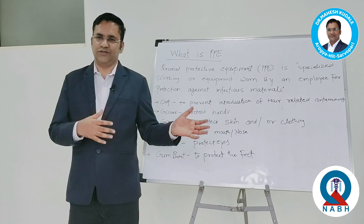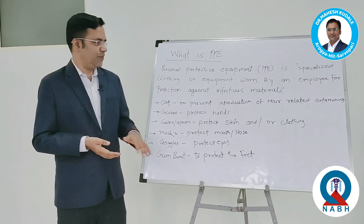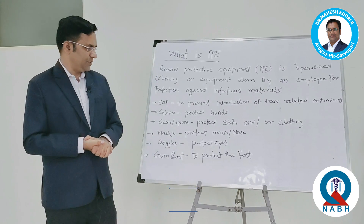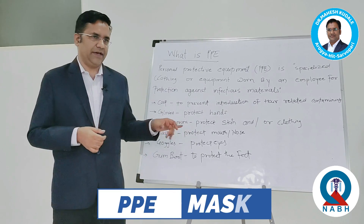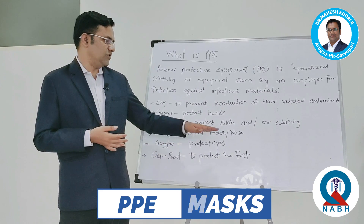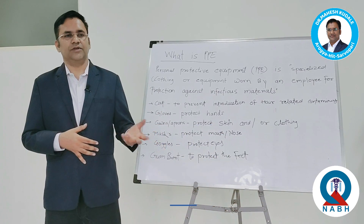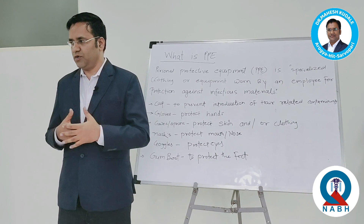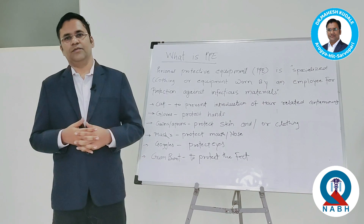तो इसके लिए पूरे body को gown होना ज़रूरी है. जैसे अगर patient का surgery चालू है और patient को HIV है, तो आपको पूरा PPE kit — यहाँ जो जो चीज़ें बताई, वो सारी आपको पहननी पड़ती हैं. Then mask — mask पहनना भी ज़रूरी है, और PPE kit में यह सबसे important है. Mask क्यों? This protects your mouth and nose. जो airborne diseases हैं, वो आपके mouth और nose से transfer होने वाले हैं, और अगर उसको रोकना है तो mask पहनना बहुत ज़रूरी है.